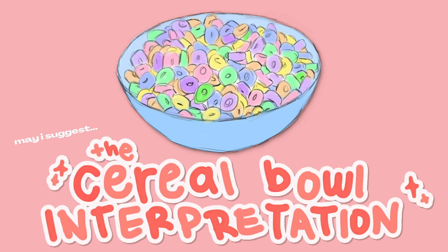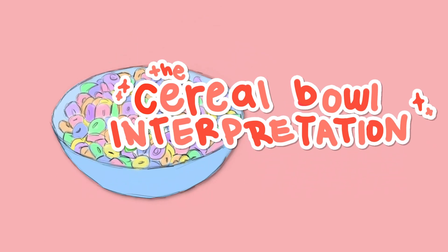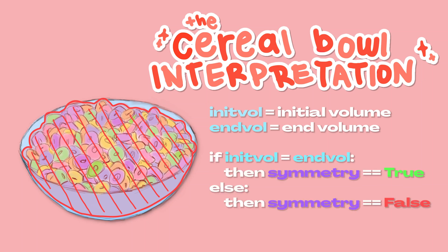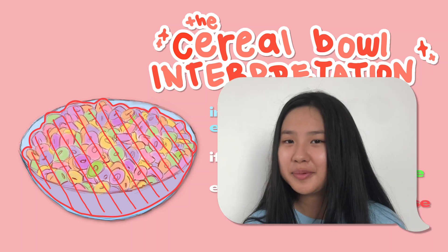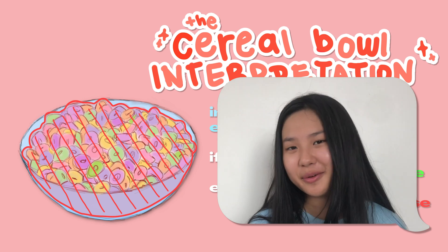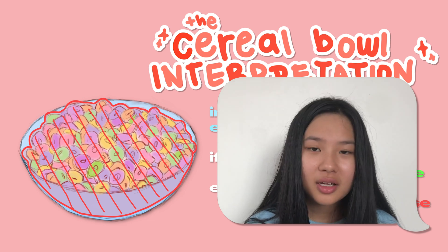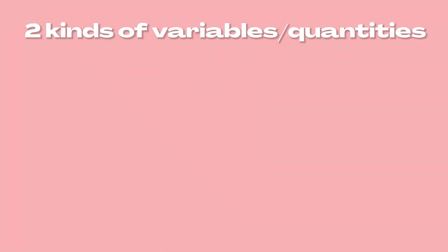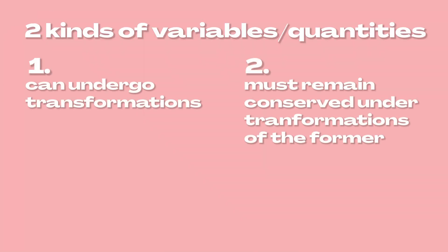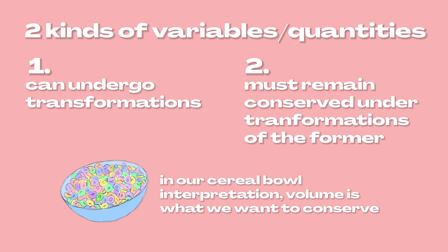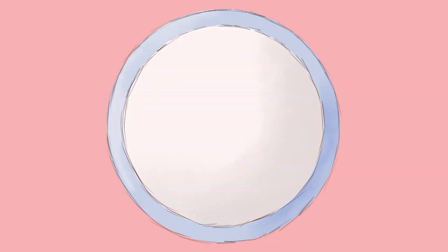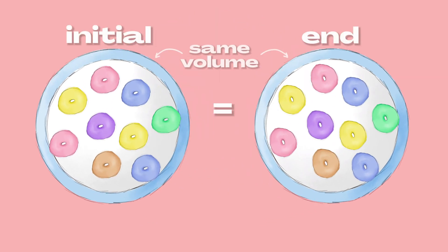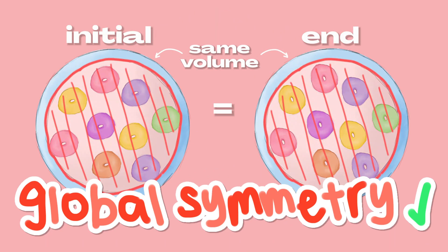Let's imagine this bowl of cereal is our system. As long as the total volume of the bowl remains the same under any transformation, it means that the system has symmetry. Don't be mistaken — our universe isn't really a bowl of cereal. What we're doing here is creating a fundamental distinction between two types of variables: one that can undergo transformations, and the other that has to remain conserved regardless of those transformations. Therefore, rotating every cereal by 90 degrees — a global transformation to the system — will leave the total volume unchanged, hence it possesses a global symmetry.